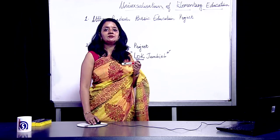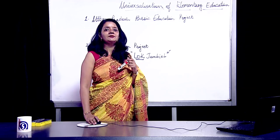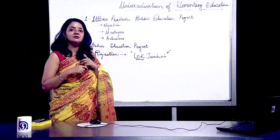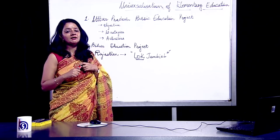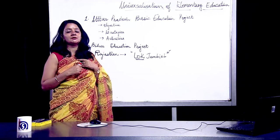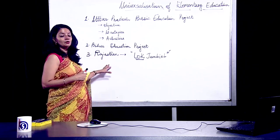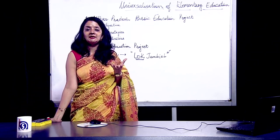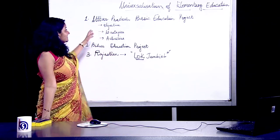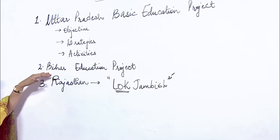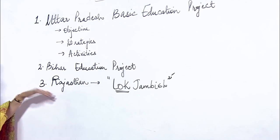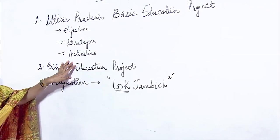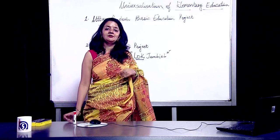Another strategy was Pravesh Utsa — an event creating a positive and creative environment for education among children, schools, and communities. Activities under Lok Jambish included: hostels for tribal children, madrasa school health programs, Anganwadi centers, Mahila Shikshak Vihar, and Balika Shiksha Shivir. To summarize, today we discussed universalization of elementary education and three projects: the Uttar Pradesh Basic Education Project, the Bihar Education Project, and the Lok Jambish project from Rajasthan — studying each project's objectives, strategies, and activities.